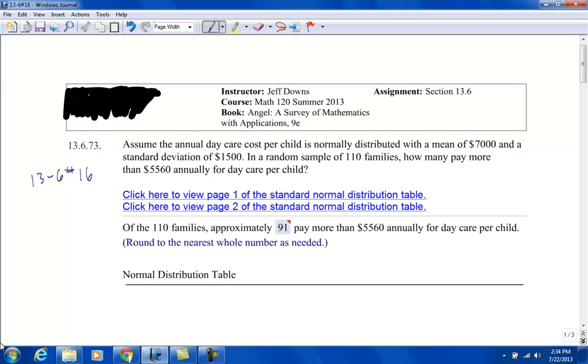Assume the annual daycare cost per child is normally distributed. It's important, normally distributed, keywords there with a mean of $7,000. So the mean is $7,000 and a standard deviation of $1,500. So standard deviation is $1,500.